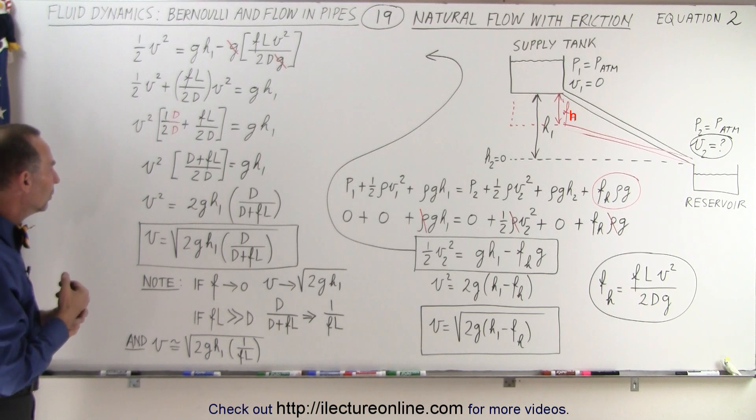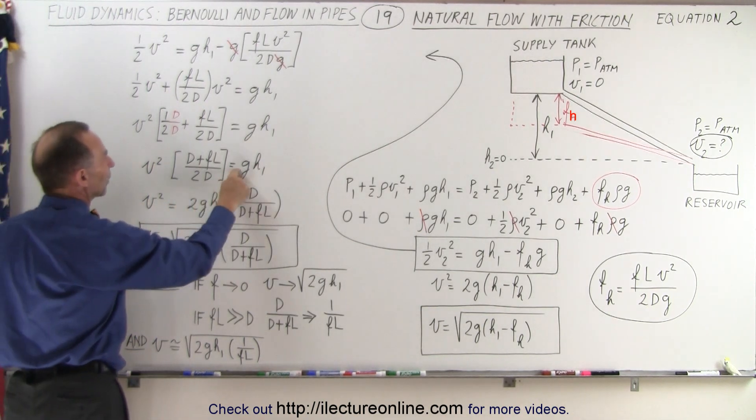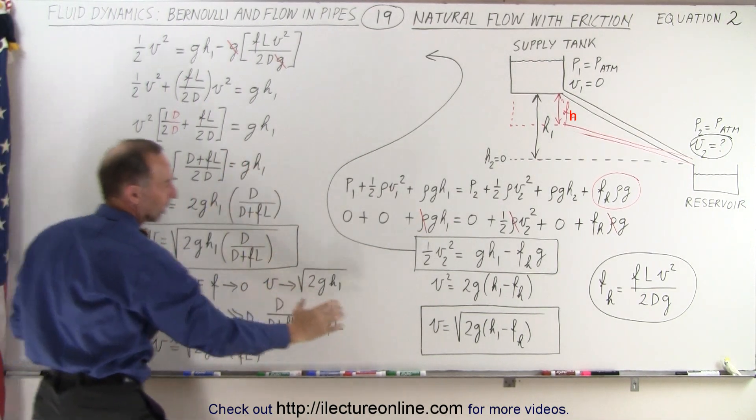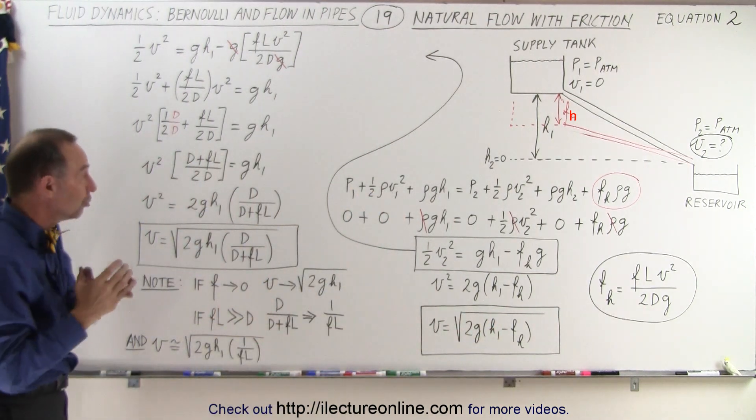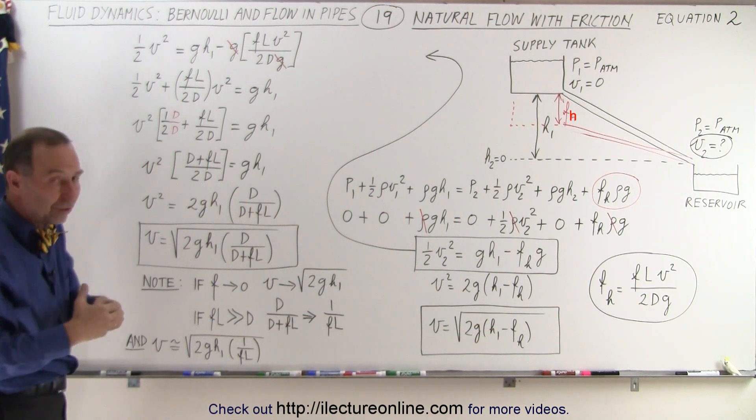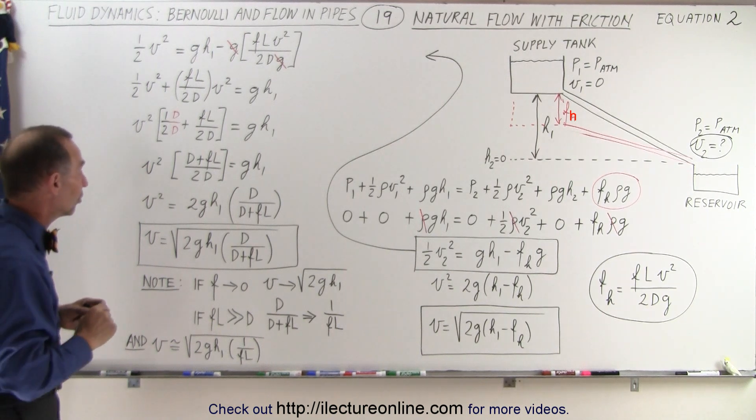Then what we want to do is we want to multiply the two over here. So we have 2gh. Again, we always like to have that concept of the square root of 2gh when we find the velocity because that's what it would be if there was no friction at all.